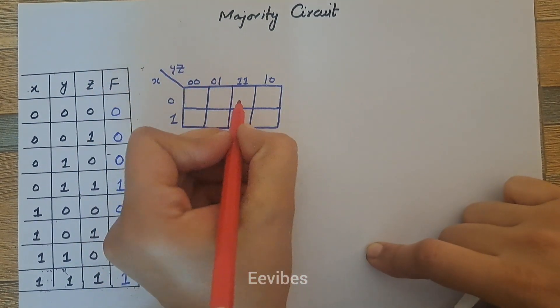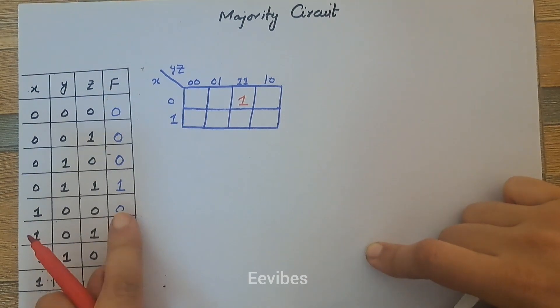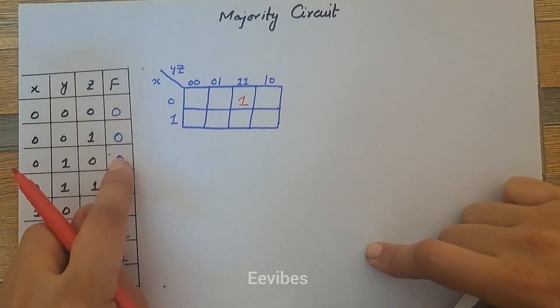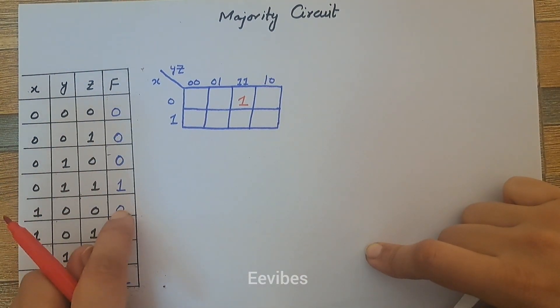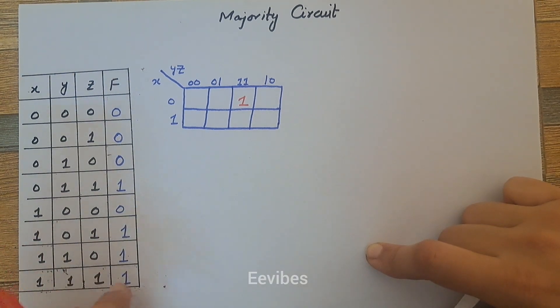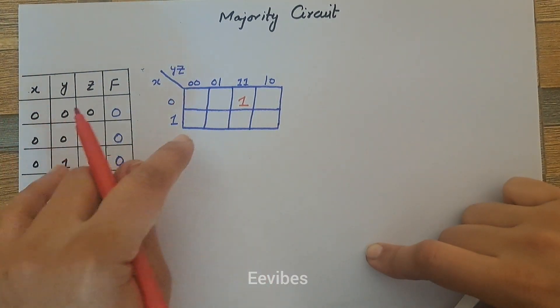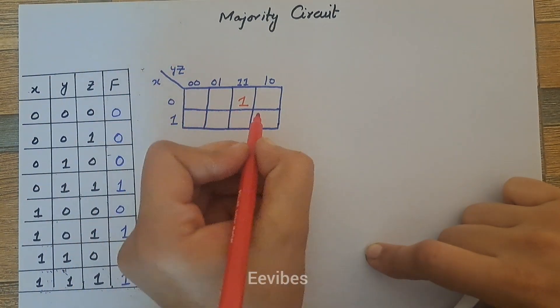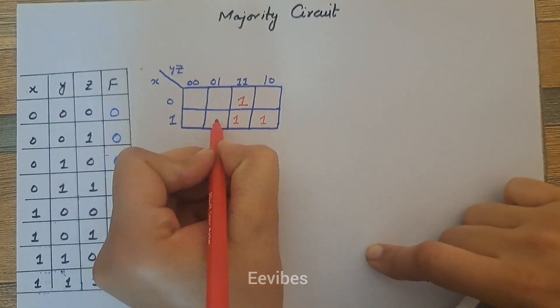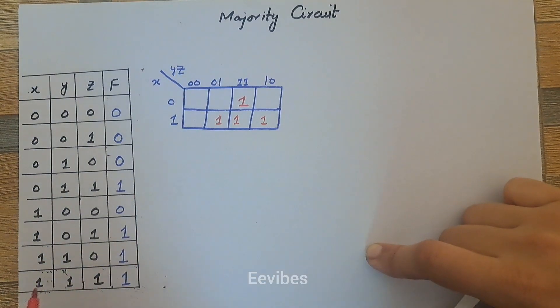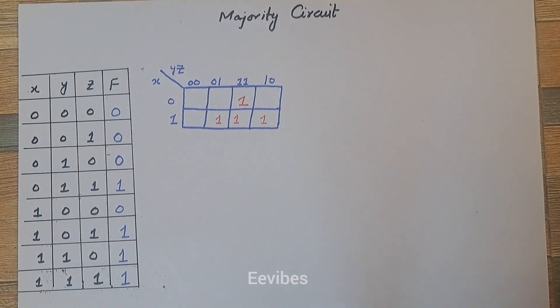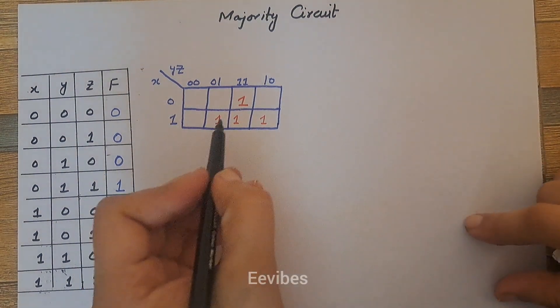So you can see m0, m1, m2, and m3. So m0, m1, m2, and m3. You will place one in this box, then zero, one, two, three, four is zero, while five, six, and seven are equal to one. So in this way you will fill the boxes of the K-map.